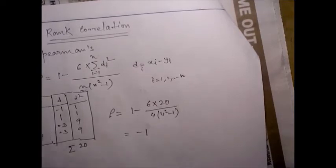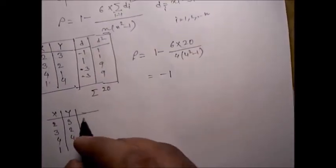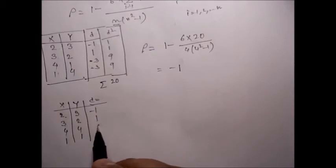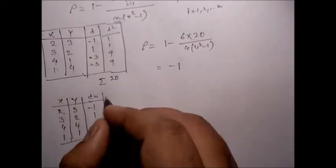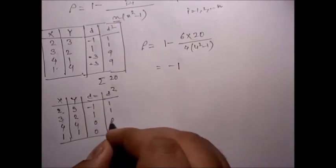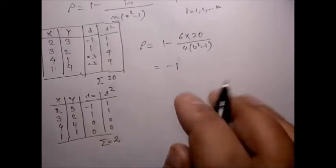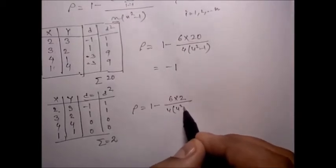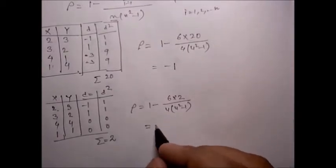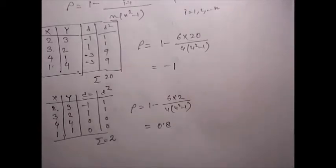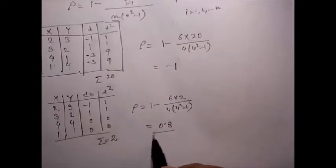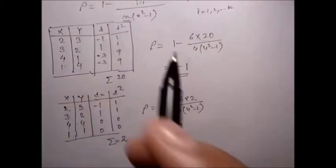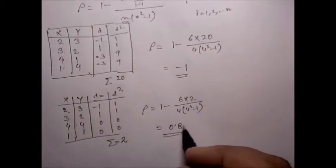That means they are negatively correlated. For the second example, d is x minus y: 2 minus 3 is minus 1, 3 minus 2 is 1, 4 minus 4 is 0, 1 minus 1 is 0. d-squared values are 1, 1, 0, 0. Summation of d-squared is 2. The formula gives 1 minus 6 times 2 divided by 4 times (4-squared minus 1), and the answer is 0.8 — positively correlated with strong correlation.